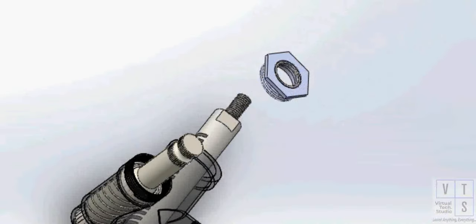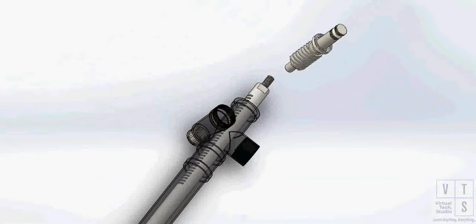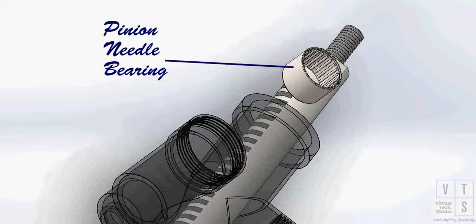Unscrew the pinion bearing plug then remove gear case oil seal and o-ring. Then remove pinion along with its bearing that will be removed later. After that, pull out the pinion needle bearing from the gear case.